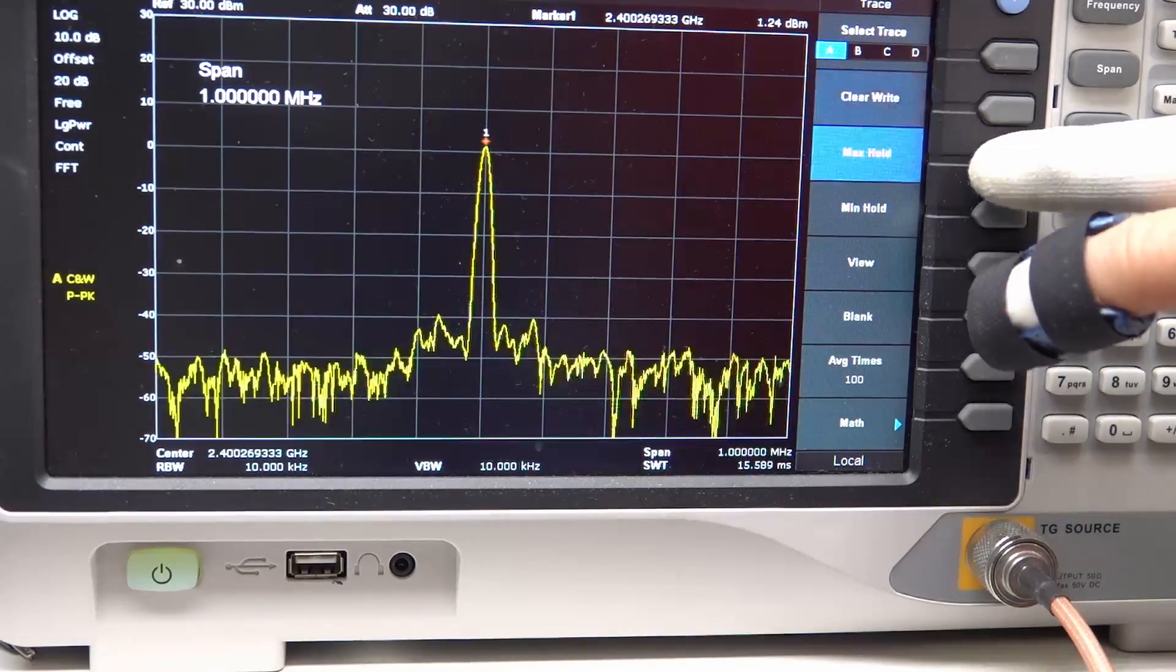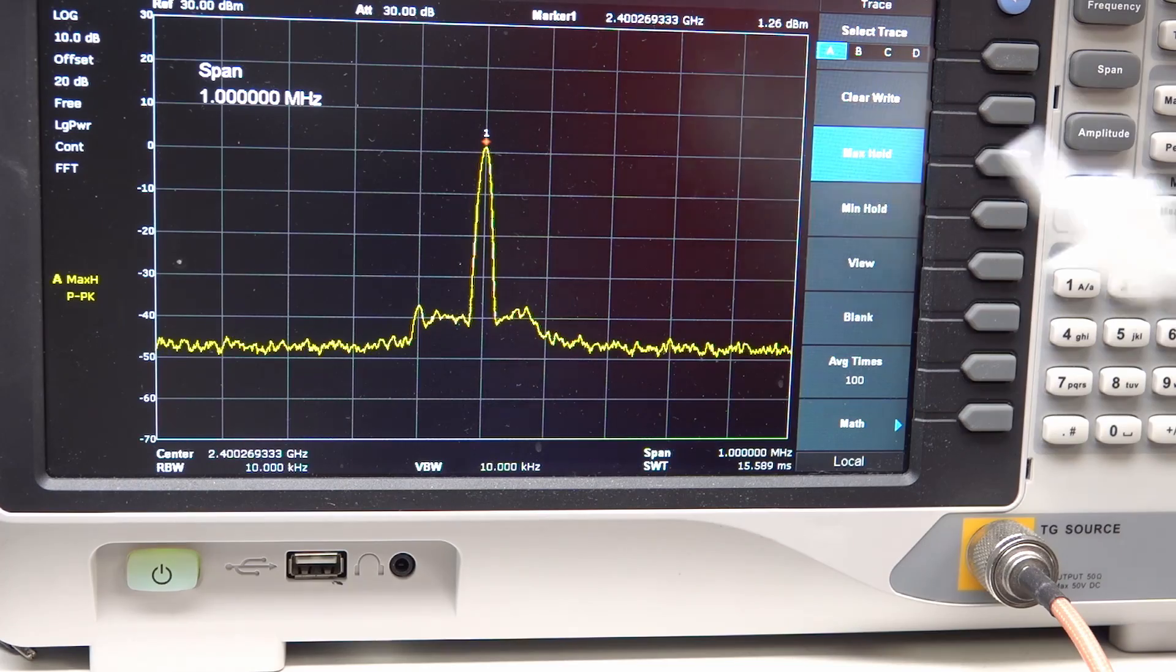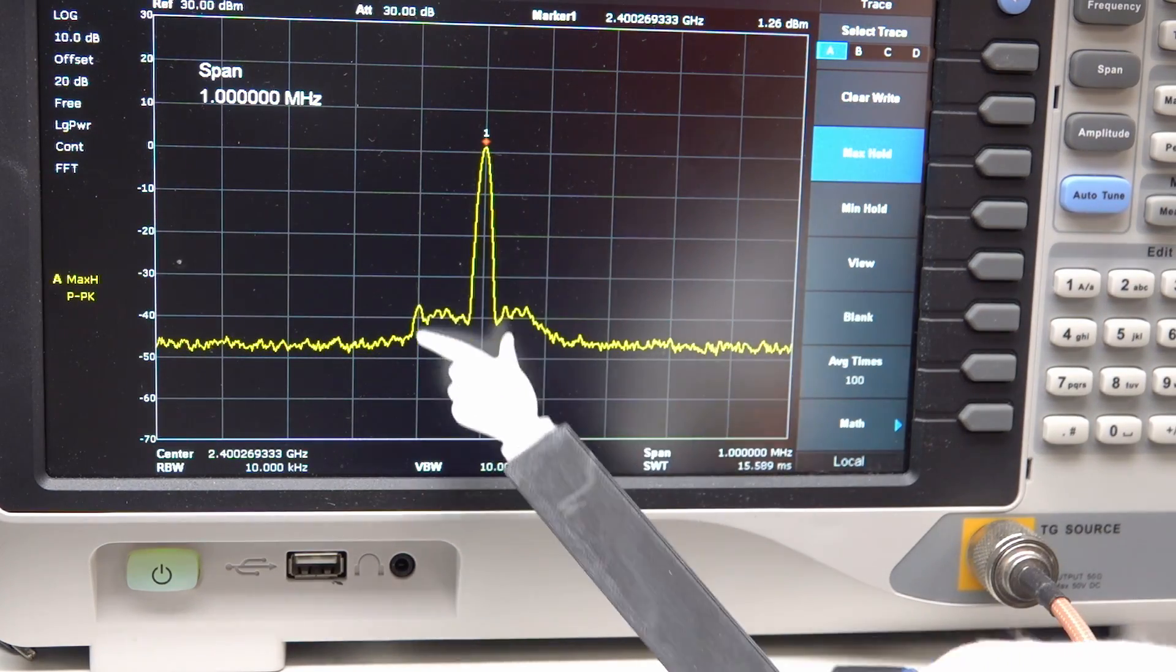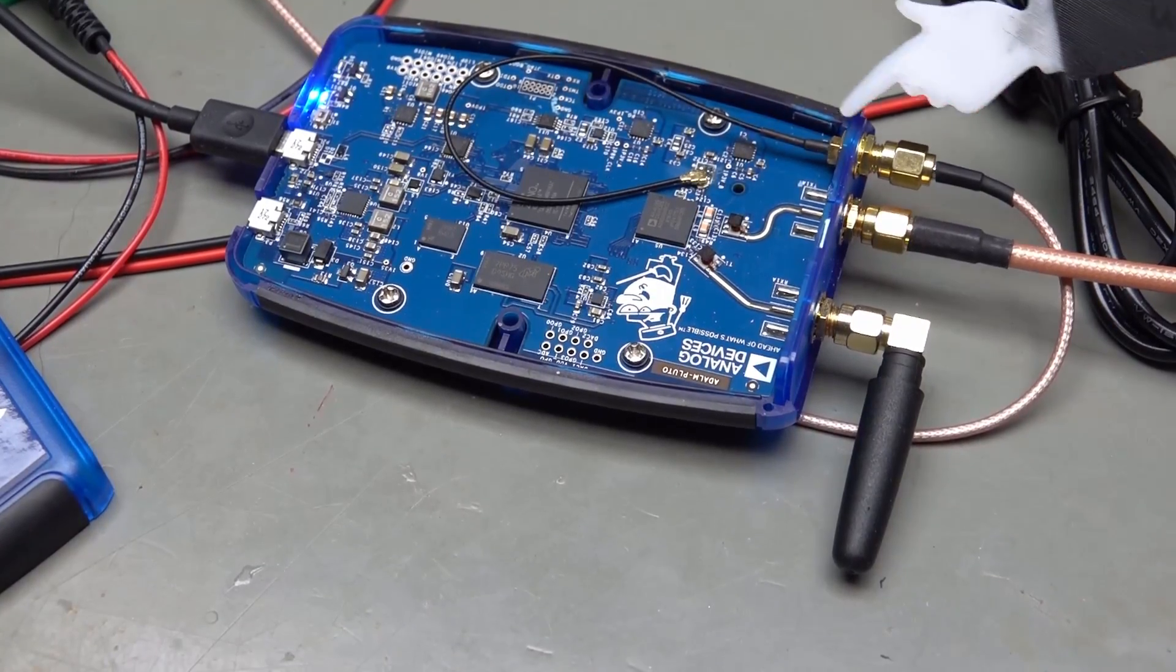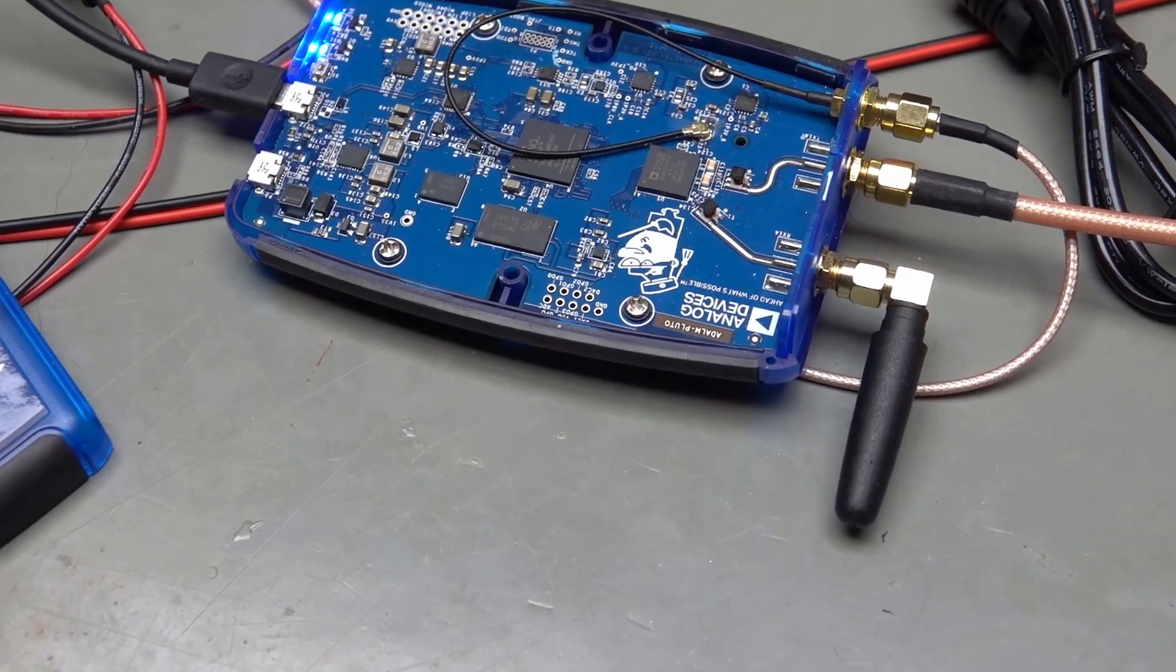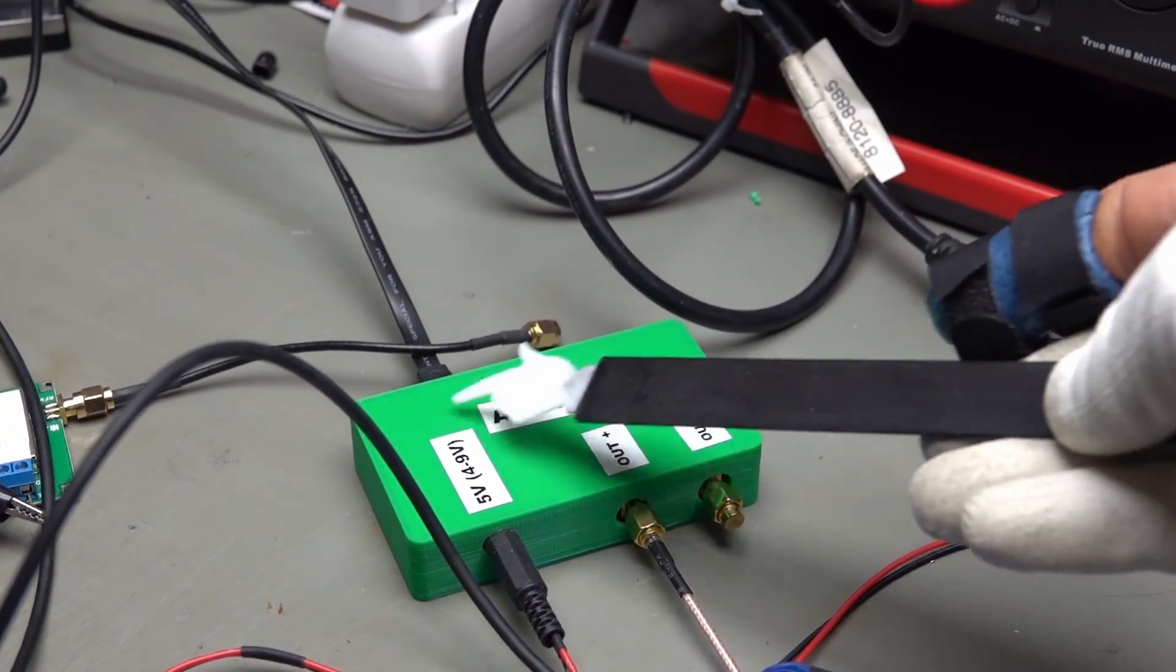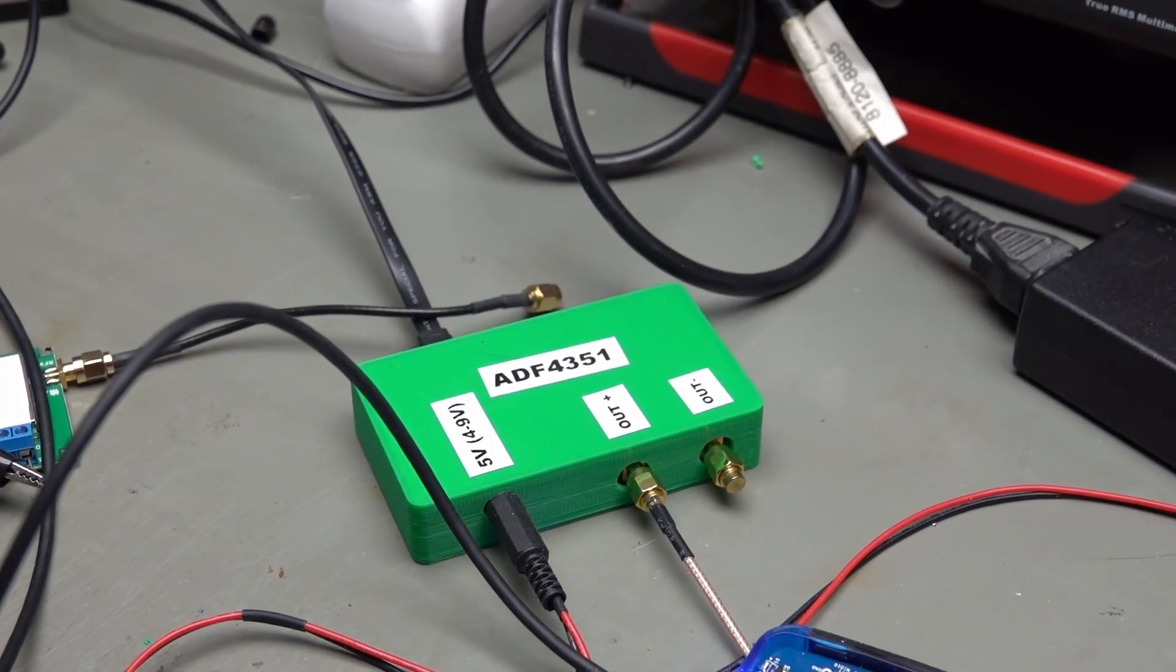Looking at the signal at full power on the Pluto, we see that we not only get the primary signal, we also get unwanted signals around the carrier. Not perfect. For the moment, I do not know where it comes from. I already modified my Pluto for an external reference signal, but I did not get the GPS DO. So, I use this ADF4351 board.